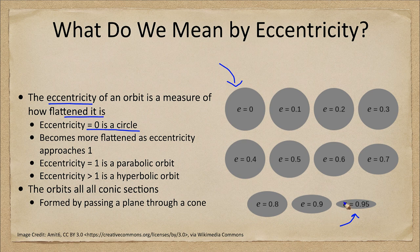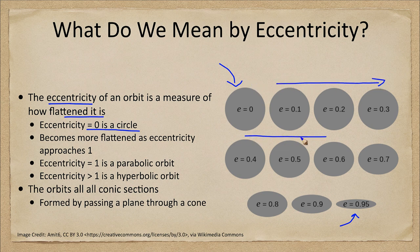The closer we get to one, the more flattened this circle becomes. So it's a circle at zero, and then we have various ellipses that are flattened to greater or lesser amounts by the value of the eccentricity.